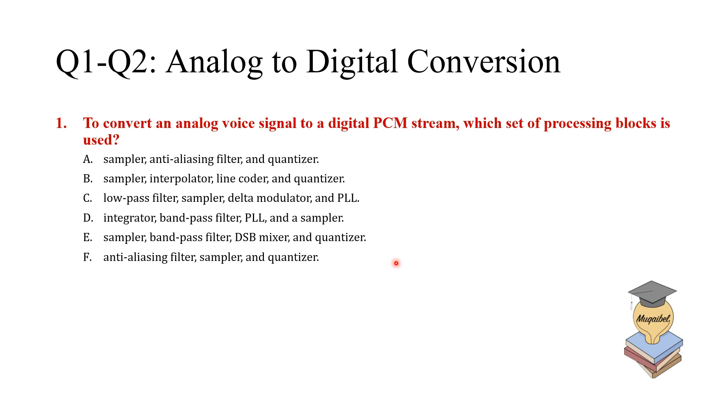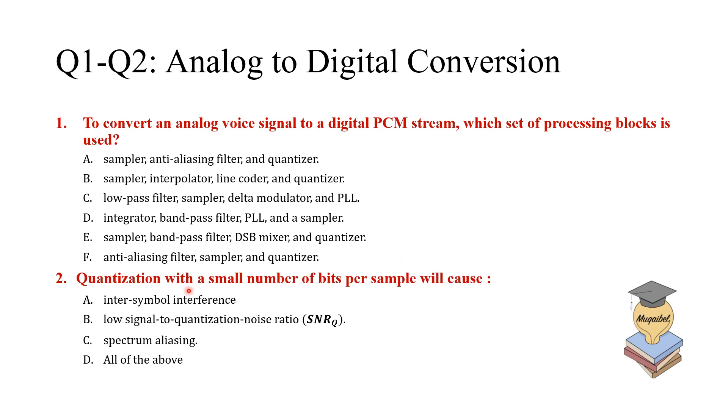Now we'll go on to the second question. Question number two. It says, quantization with small number of bits per sample will cause one out of these four options. Inter-symbol interference, low signal to quantization noise ratio, spectrum aliasing, or all of the above.